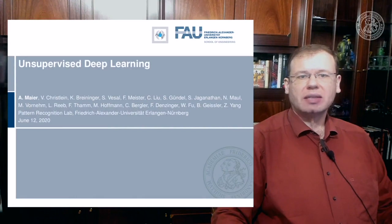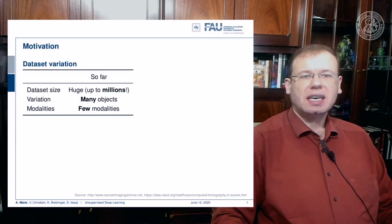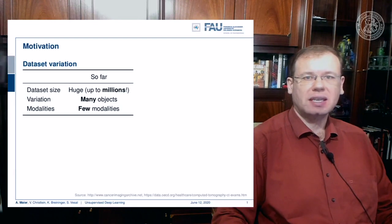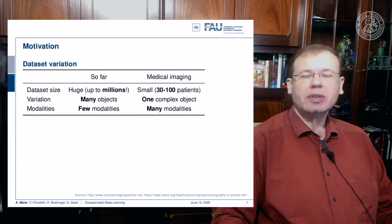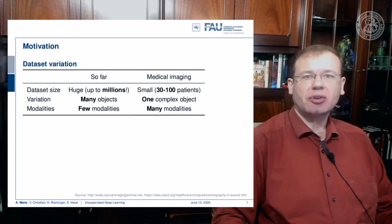The main topic is unsupervised learning, and we start with motivation. The datasets we've seen so far are huge, with up to millions of different training observations, many objects, but few modalities — most things we've looked at were essentially camera images. However, this is not generally the case. In medical imaging you typically have very small datasets, maybe 30 to 100 patients, one complex object — the human body — and many different modalities from MR to X-ray to ultrasound.